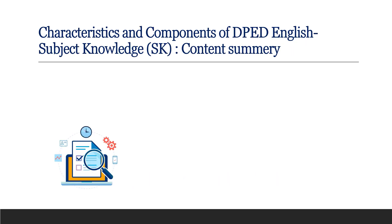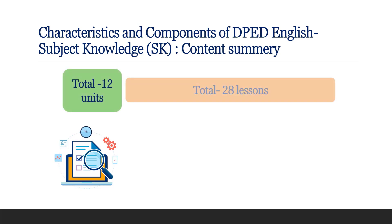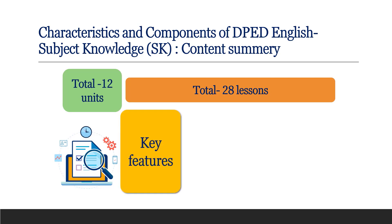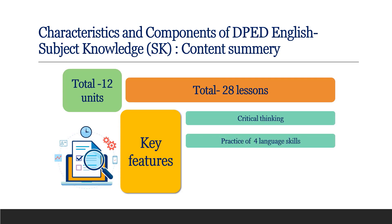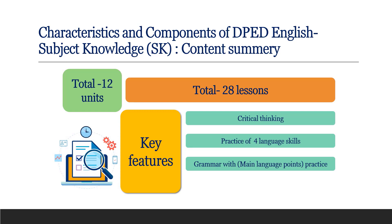This is the content summary of the characteristics and components of DPA English Subject Knowledge. Here we have a total of 12 units and a total of 28 lessons, where we will learn about critical thinking, practice of four language skills, grammar with the main language point practice, and language practice with real life situations.